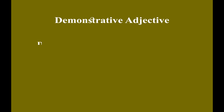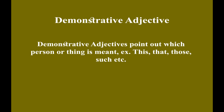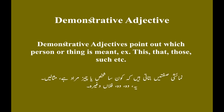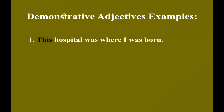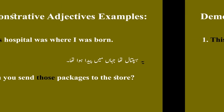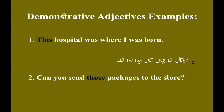Demonstrative adjective. Demonstrative adjectives point out which person or thing is meant. Examples: this, that, those, such, etc. Demonstrative adjective examples. Example number one: This hospital was where I was born. Ye woh hospital tha jahan mein paida hua tha. Example number two: Can you send those packages to the store? Kya aap un packages ko store par bhej sakte hain?